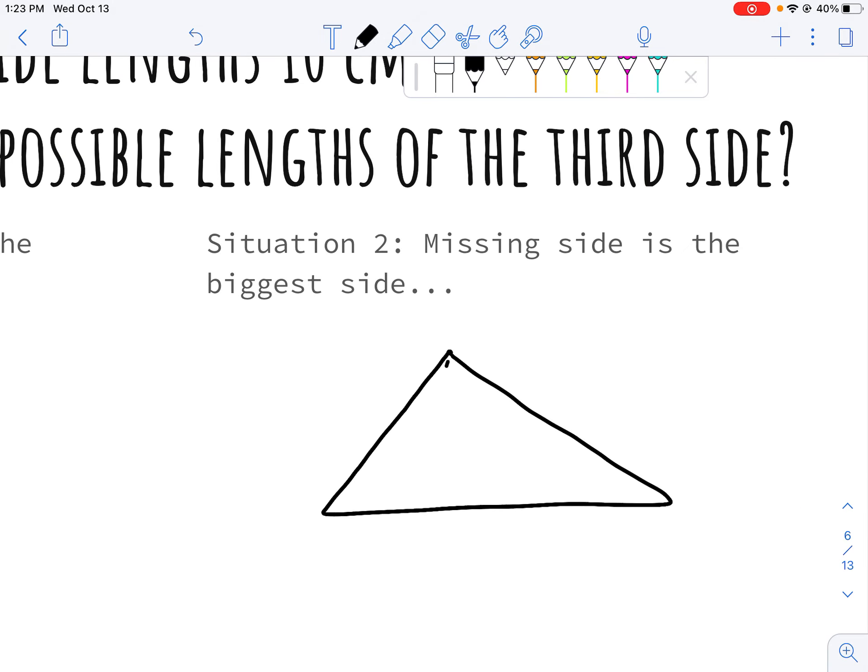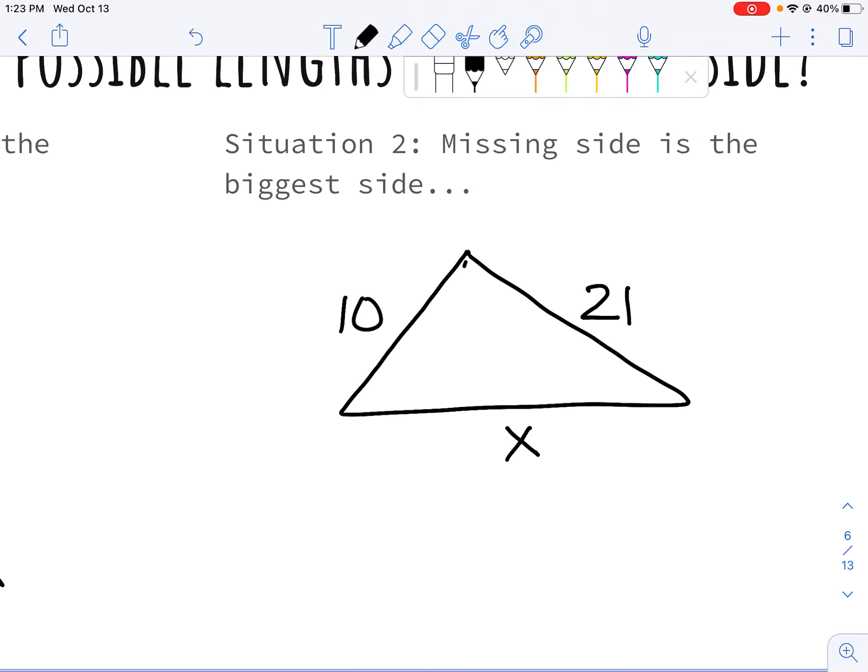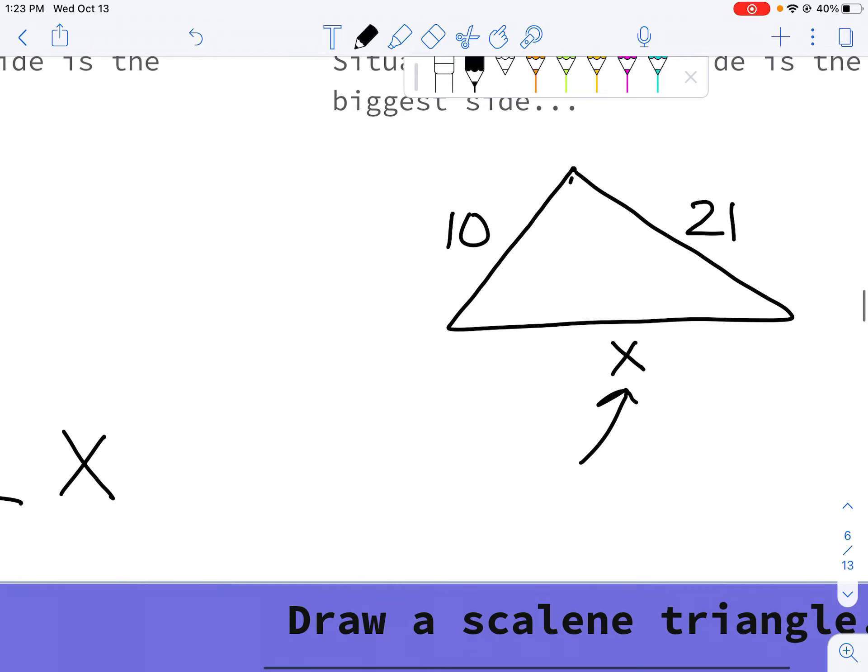My second scenario that I want to consider is, well, what if I'm missing the biggest side? Now I'm going to think about what's the biggest number. What's the first number that doesn't work there? And the first number that doesn't work is 31, because 10 plus 21 isn't bigger than 31.